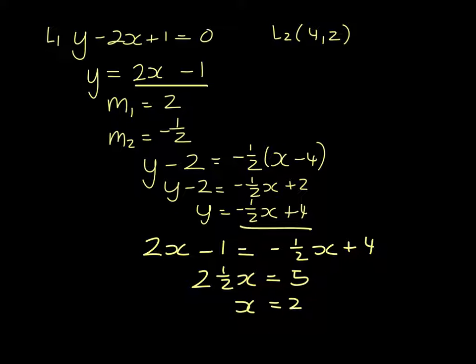x equals 2, which means that y equals minus 1 half x, so minus 1 plus 4, which is 3. So the point of intersection is 2, 3.